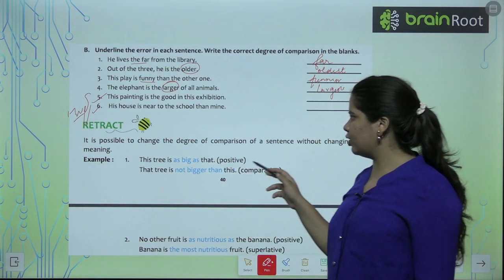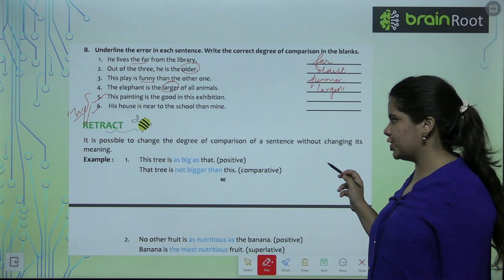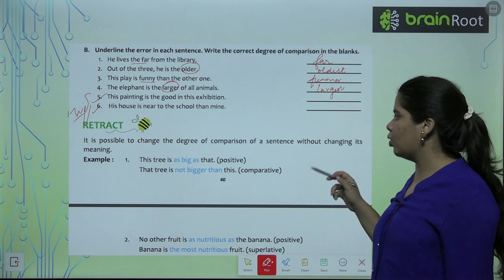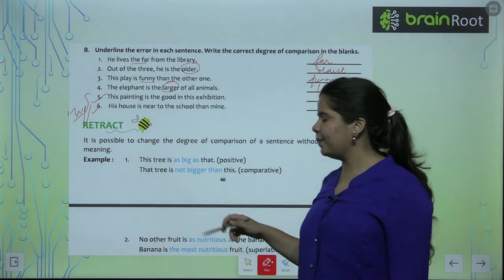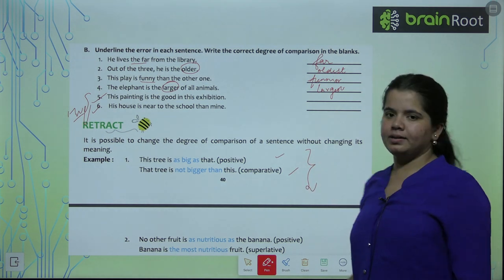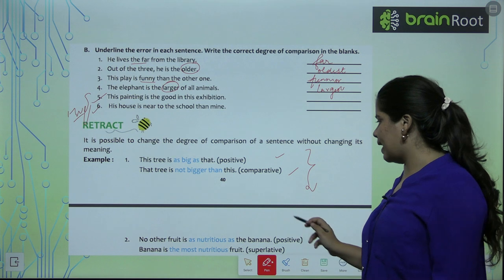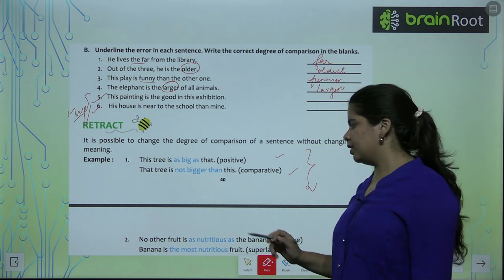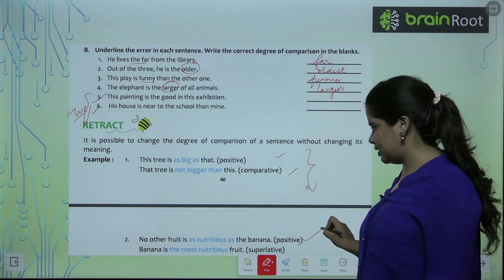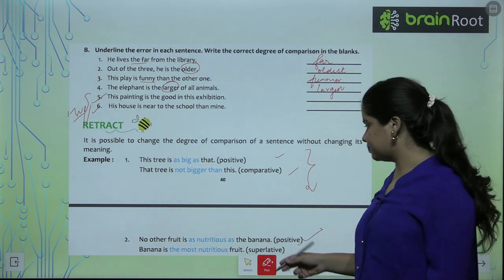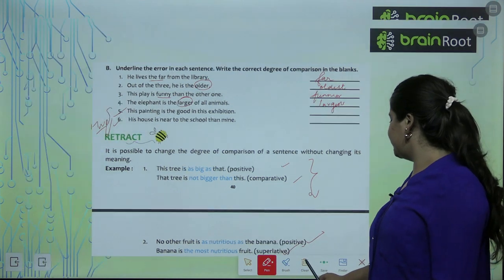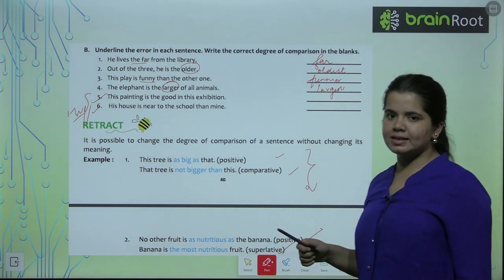It is possible to change the degree of comparison of a sentence without changing the meaning. For example: 'This tree is as big as that' and 'That tree is not bigger than this' — both sentences have the same meaning but use different degrees. Similarly, 'No other fruit is as nutritious as banana' uses positive degree, while 'This is the most nutritious food' uses superlative degree.